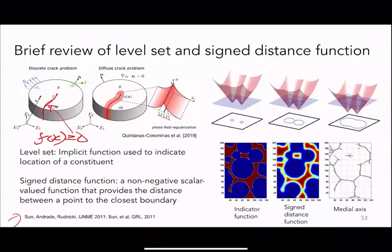A level set is a scalar function in the spatial domain that equals zero at the interface. A sign convention indicates whether a point is in phase one or phase two — the sign change between two points indicates they are in different material states. Level sets are also called indicator functions.